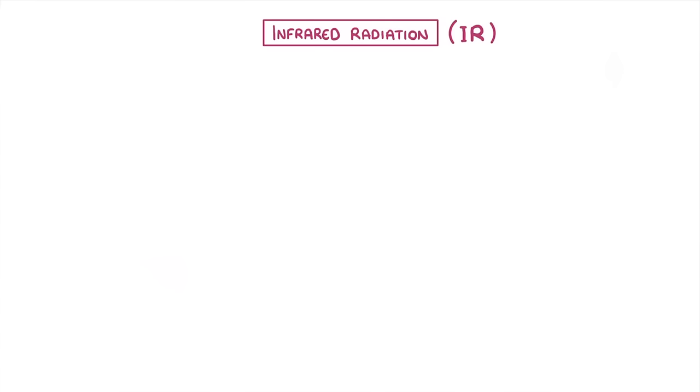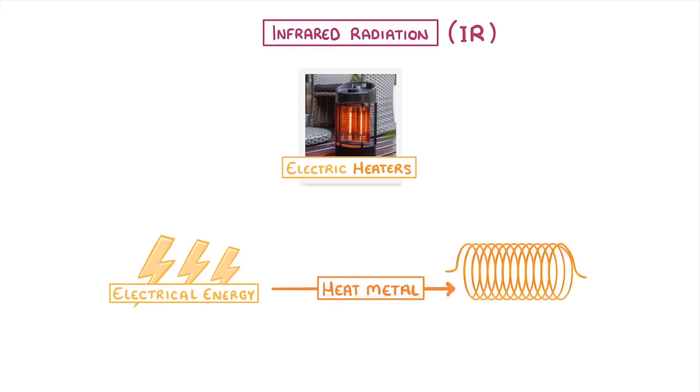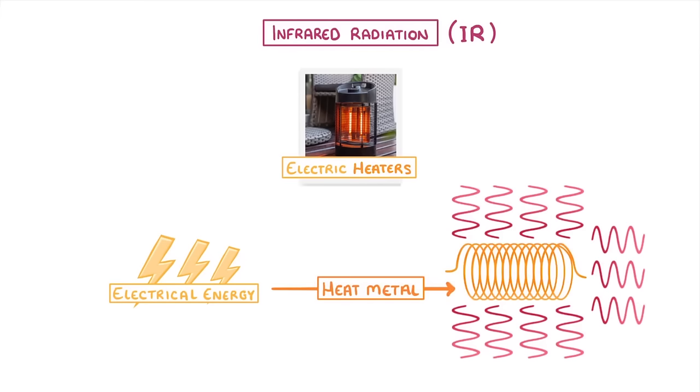We also make use of infrared radiation whenever we use electric heaters. These devices use electrical energy to heat up the metal of the heater, and then because it's so hot, it emits infrared radiation to the surroundings, which is able to heat up our rooms.